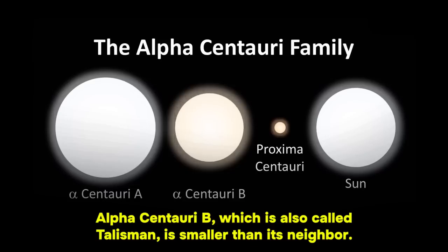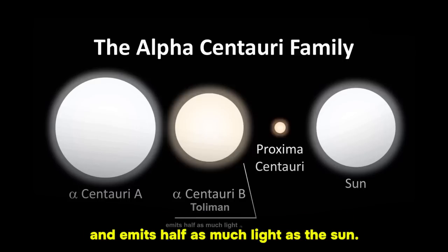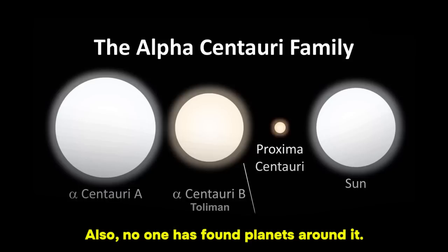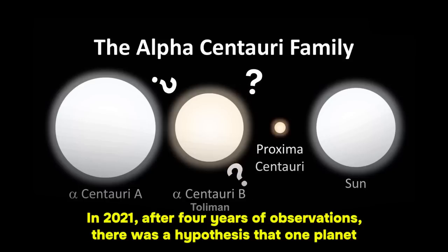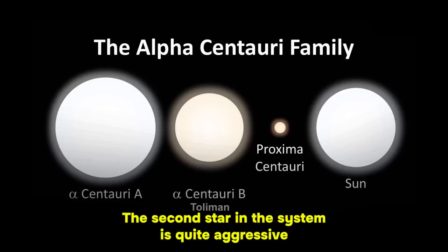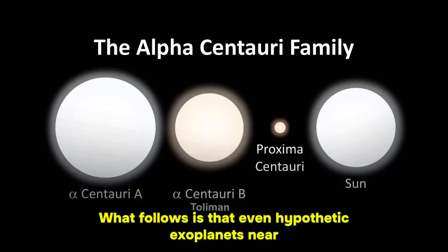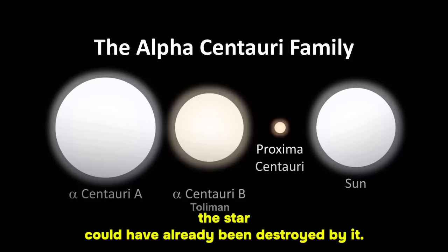Alpha Centauri B, which is also called Tolyman, is smaller than its neighbor. It is 10% smaller than the Sun, has an orange color, and emits half as much light as the Sun. Also, no one has found planets around it. In 2021, after four years of observations, there was a hypothesis that one planet does orbit Alpha Centauri B, but it was later found to be a computational error. However, the second star in the system is quite aggressive, and it often throws out long prominences from its surface. What follows is that even hypothetical planets near the star could have already been destroyed by it.